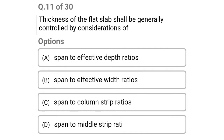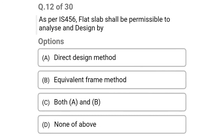Next question: thickness of the flat slab shall generally be controlled by consideration of — option A: span to effective depth ratio, option B: span to effective width ratio, option C: span to column strip ratio, option D: span to middle strip ratio. The correct answer is option A: span to effective depth ratio.